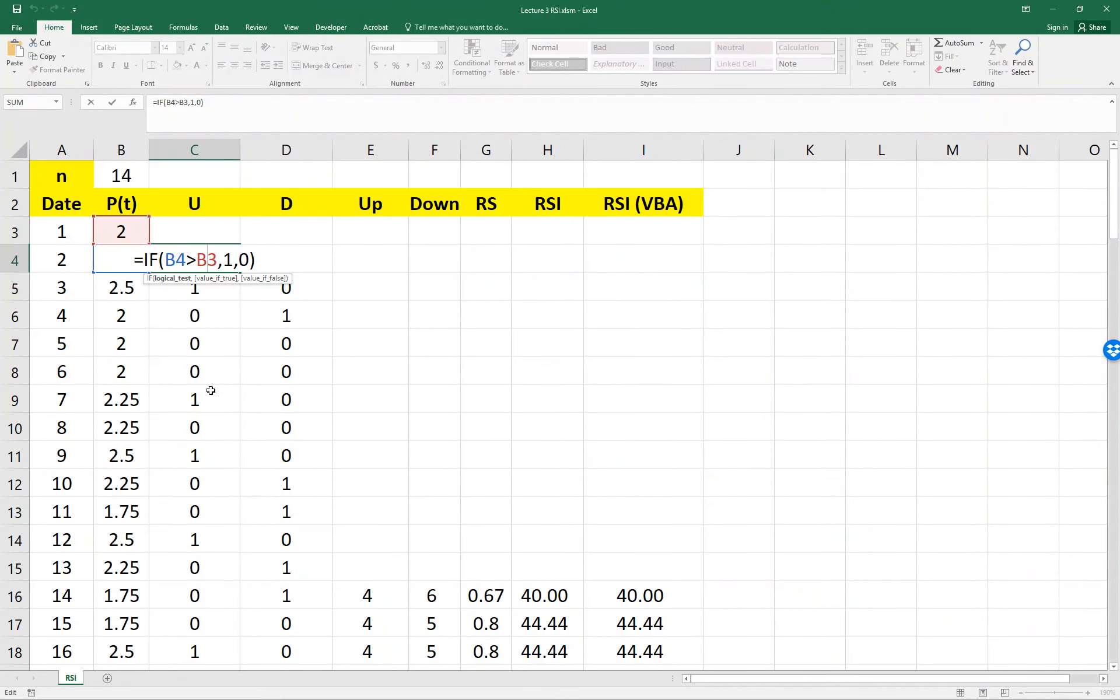Up is just very simple. Just the price of B4 over B3. If that case is 1. And inversely, if B4 is less than B3, D is 1. So you can copy this all the way down.